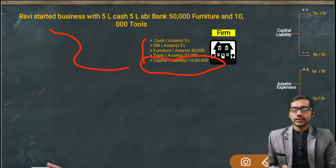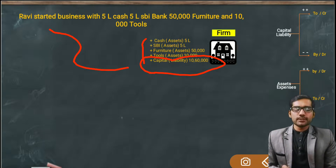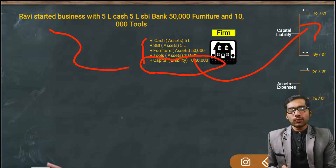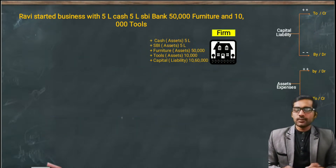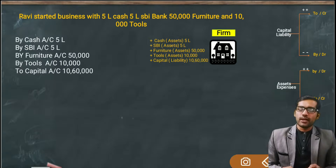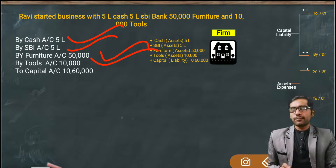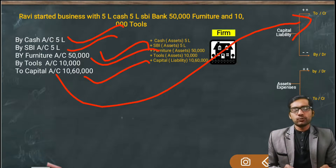Now we need to convert this into General Journal Entries. The rule is: for Liabilities entries, when a plus symbol appears, replace it with 'Cr' (credit/two), and for Assets entries, replace the plus symbol with 'Dr' (debit/buy). So the entry will be: By Cash Account 5 lakh, By SBI Account 5 lakh, By Furniture Account 50,000, By Tools Account 10,000, and Cr Capital Account 10,60,000 rupees.